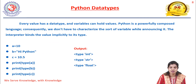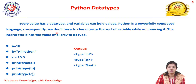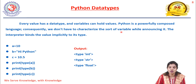Moving to Python data types — first, what is a variable? A variable is used for storing any value. Every value stored in a variable has a data type. Variables can hold values, and Python is a powerfully composed language where you don't need to declare the type of a variable while announcing it — the interpreter binds the value implicitly to its type.